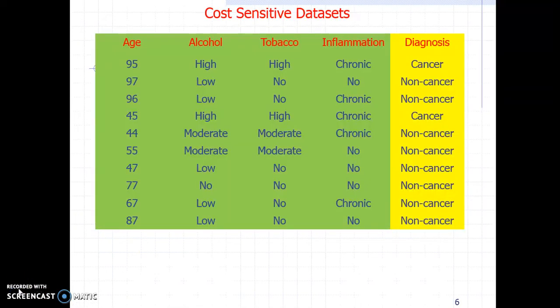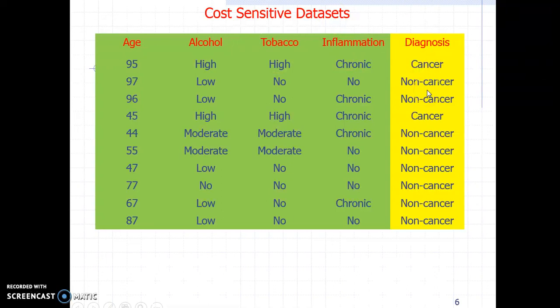From my previous video on cost-sensitive decision forest algorithms, you may also know that some datasets may be cost-sensitive — that is, the class values may have some cost where it is very expensive to make a mistake in classification. For example, cancer is a very costly, cost-sensitive class value; if you make a mistake predicting cancer, the consequences can be very heavy.